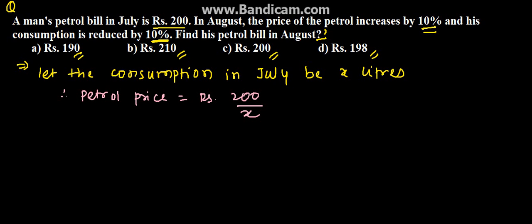Now the petrol price has increased by 10%. So it will be 1.10, because if this is 100%, it increased by 10%, so 110% is 1.10. So the cost price will be 1.10 into the petrol price, which is 200 upon x.